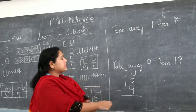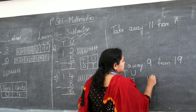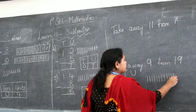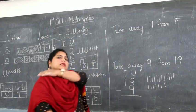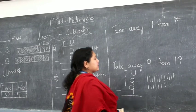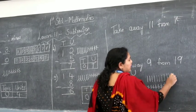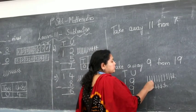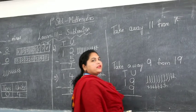So we have to do 19 minus 9. I will draw 19 lines: 1 through 19. So 19 lines are drawn. We have to remove 9 sticks. So let's cancel 9: 1, 2, 3, 4, 5, 6, 7, 8, 9. I removed 9. What am I left with? 1, 2, 3, 4, 5, 6, 7, 8, 9, 10. So I am left with 10.